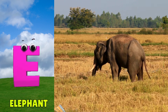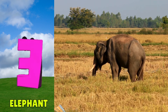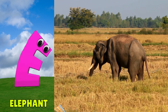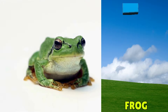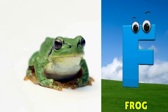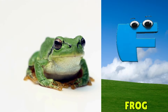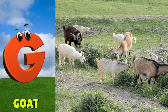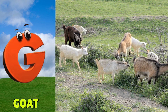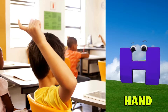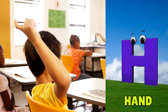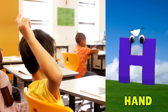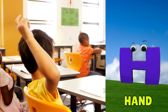E is for elephant, e-e-elephant. F is for frog, f-f-frog. G is for goat, g-g-goat. H is for hand, h-h-hand.